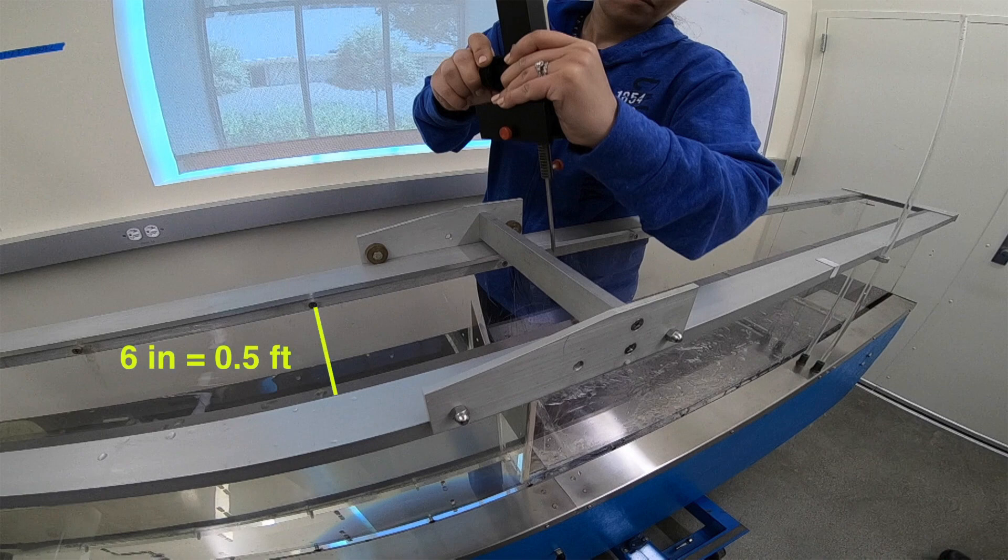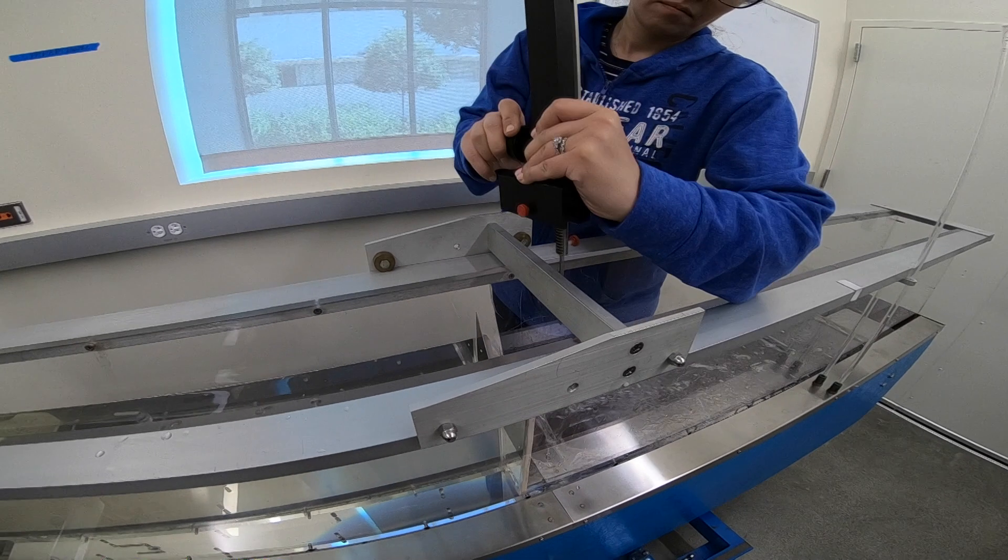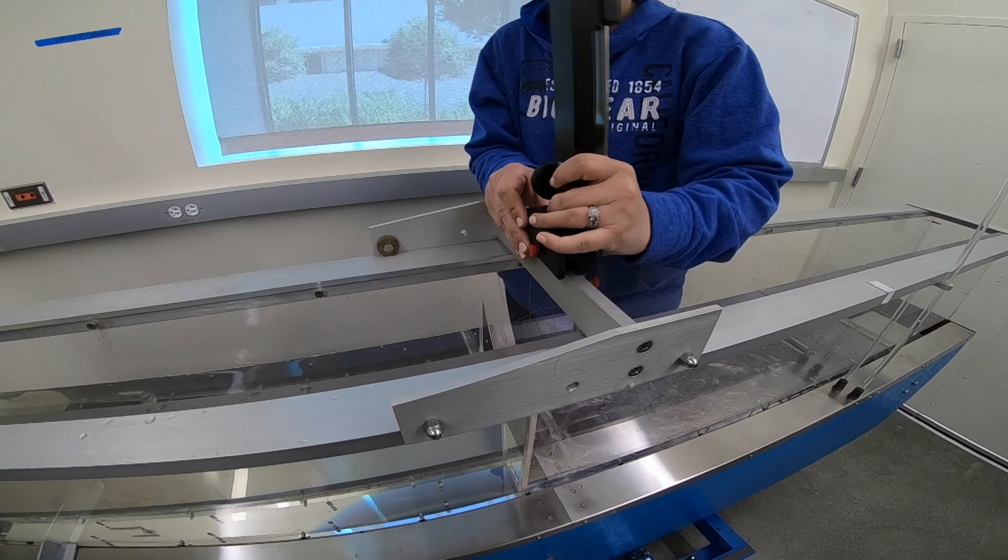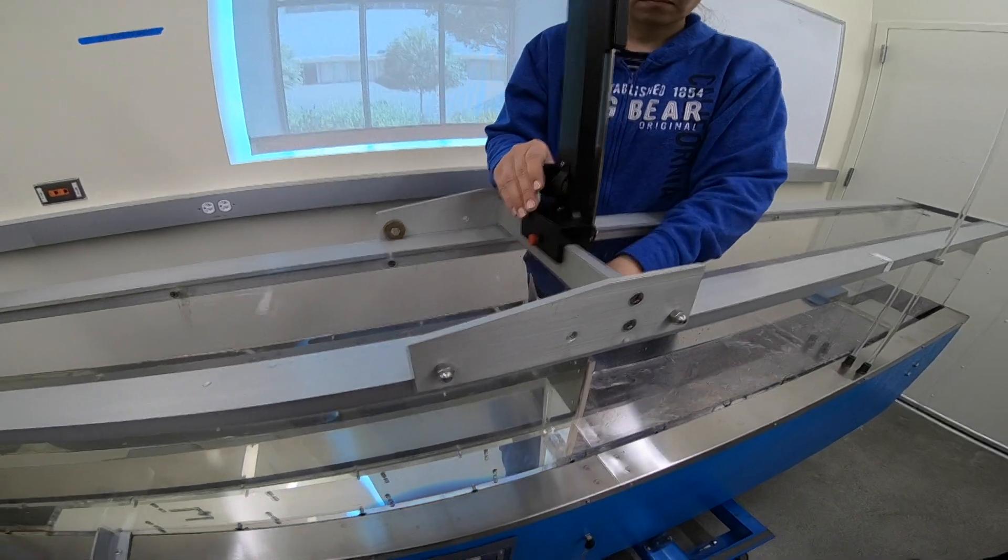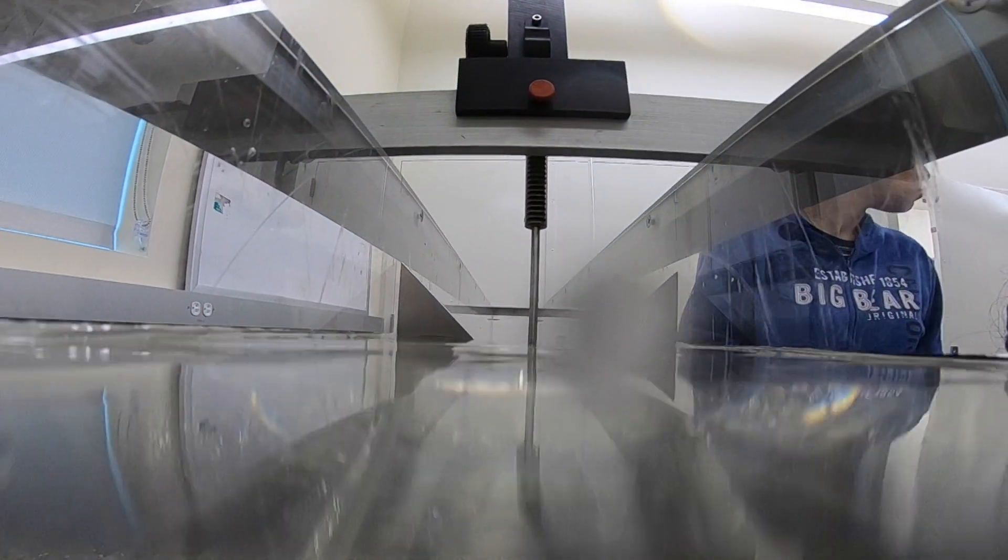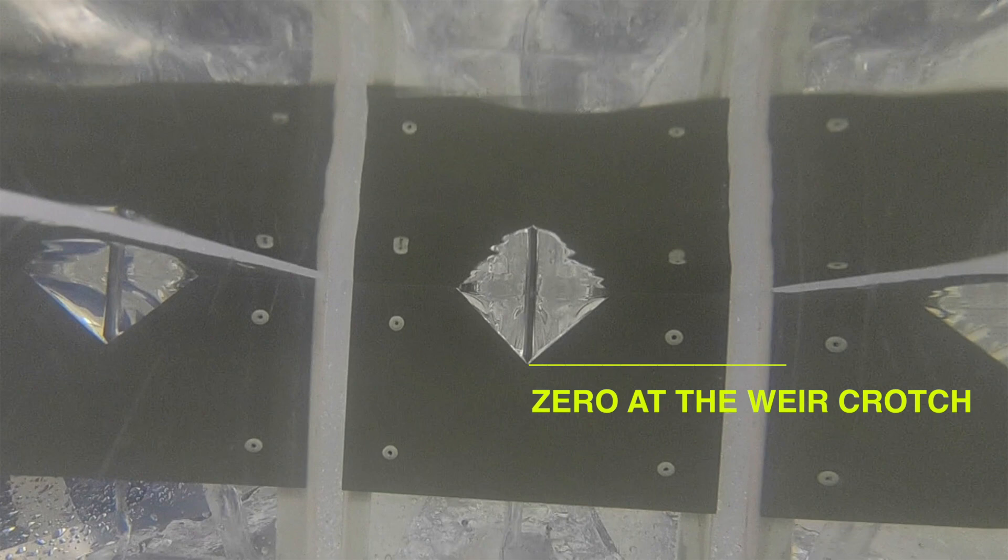The width of the flume is 6 inches. We set the point gauge at 0 at the weir crotch.